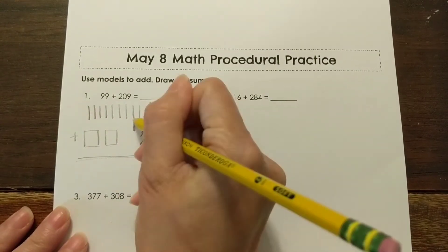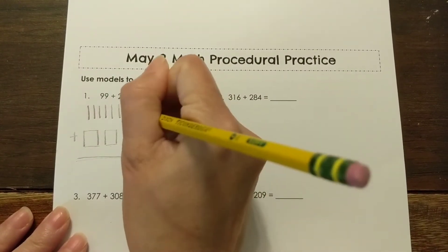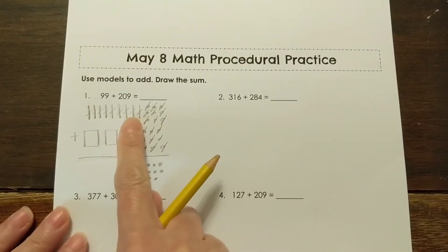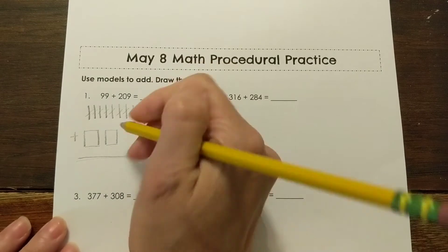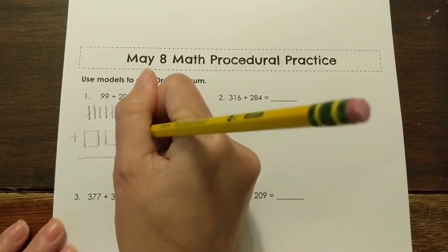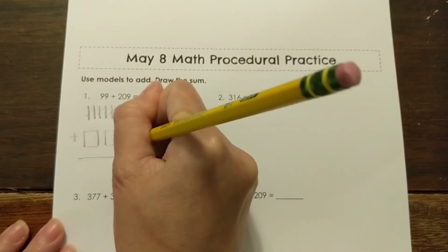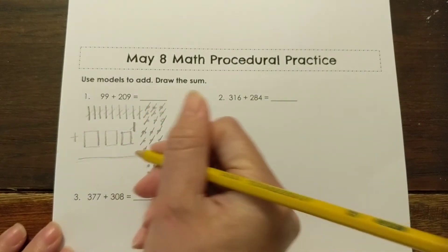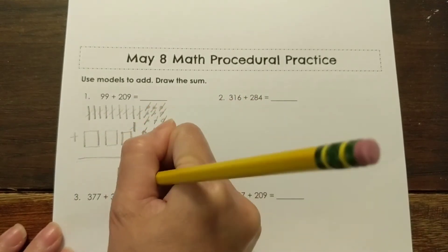Alright, now we're going to add our tens. 1, 2, 3, 4, 5, 6, 7, 8, 9, 10. Oh, 10 tens means I have another 100. So I'm just going to take and put one more 100 here. And then hundreds, I have 1, 2, 3 hundreds. I have 300. So I'm going to bring those down.